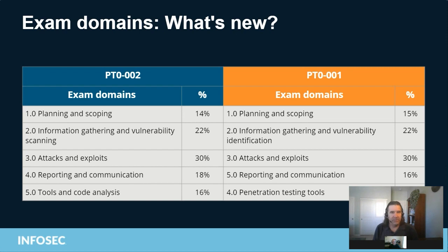Security Onion is also widely used, as is Kali Linux. Looking at the exam domains, they are very similar to the previous version — the only real changes are that domains 4 and 5 switched order, the 'code analysis' title was added, and 'identification' was moved to 'hands-on scanning.'